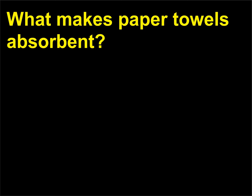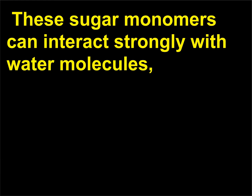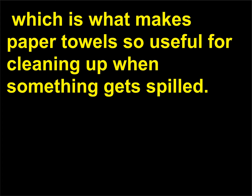What makes paper towels absorbent? Paper towels are composed of cellulose fibers, which are polymers that contain many sugar monomers. These sugar monomers can interact strongly with water molecules, which is what makes paper towels so useful for cleaning up when something gets spilled.